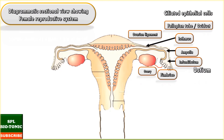The middle part of the fallopian tube is the ampulla, where fertilization usually occurs. The isthmus is the distal part of the fallopian tube and is connected to the uterus. The fallopian tube leads to the uterus.